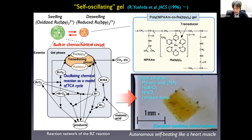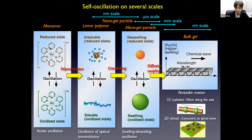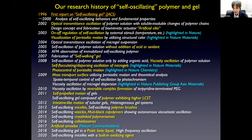This is the actual image of the microscope observation. At constant and completely closed solution conditions, the gel shows autonomous self-beating like a heart muscle. At the green oxidized state, the gel swells; at the reduced orange state, the gel shrinks. The redox oscillations are converted by the soluble and insoluble — extended and collapsed — state changes of the polymer. By cross-linking, such swelling and deswelling oscillation occurs. If the gel size becomes larger, with the coupling of diffusion, a chemical wave occurs and peristaltic motion is induced — self-oscillating polymer gels.